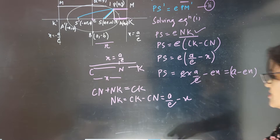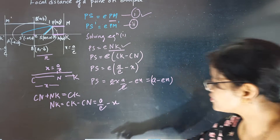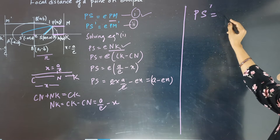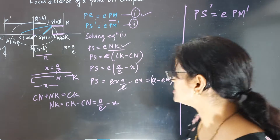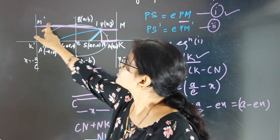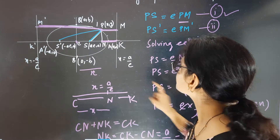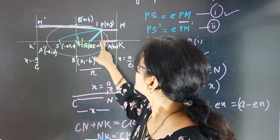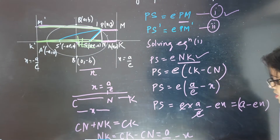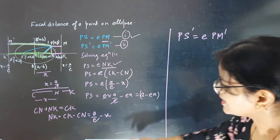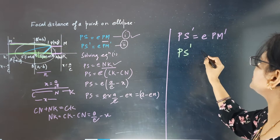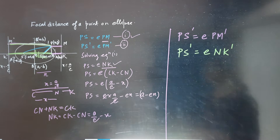Now we have PS = a minus ex. Next, we find PS dash. We know PS dash = e times PM dash. PM dash is the distance from P to the other directrix, and since PM dash is parallel to NK dash, we write PS dash = e times NK dash.